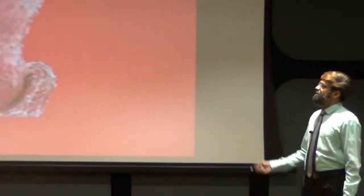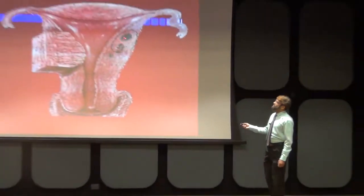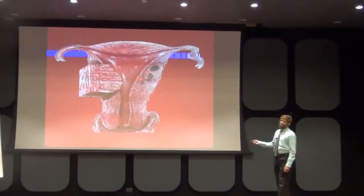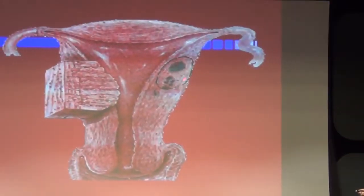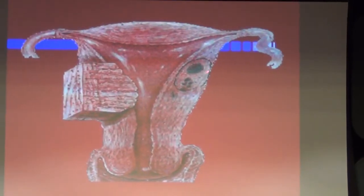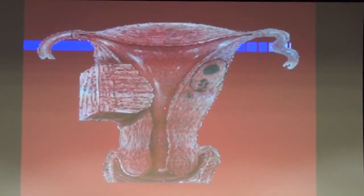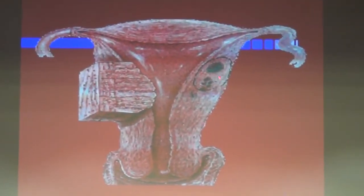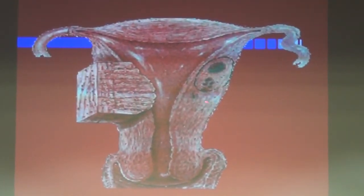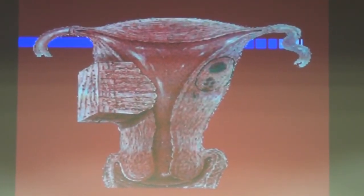Here you can see endometriosis interna, or adenomyosis, in the uterine cavity — not associated with the endometrium as such, but in the myometrial area.